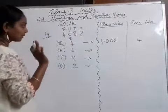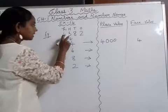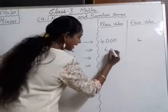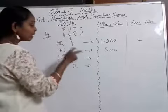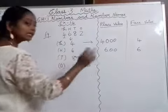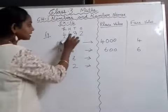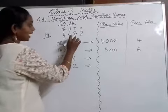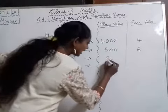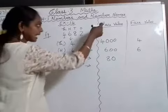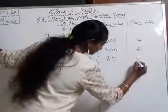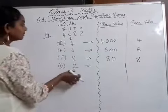Next, take the digit 6. It is in the hundreds place, so 600 will be the place value. But the face value of 6 is 6 — the same number. Next, take 8. It is in the tens place, so the place value of 8 is 80.